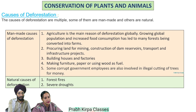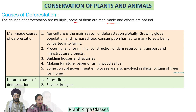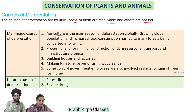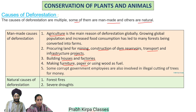The causes of deforestation are multiple — some are man-made and others are natural. Man-made causes include: agriculture, which is the main reason globally, as growing population and increased food consumption have led to forests being converted into farms; procuring land for mining, construction of dam reservoirs, transport and infrastructure projects; building houses and factories; making furniture, paper or using wood as fuel; and corrupt government employees involved in illegal cutting of trees for money.